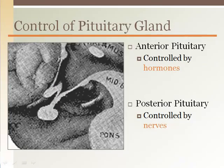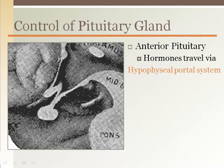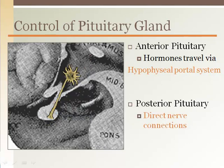The pituitary gland is divided into two parts: the anterior and the posterior. The anterior pituitary is controlled by hormones released by the hypothalamus. The posterior pituitary is controlled by nerves coming from the hypothalamus. The hormones from the hypothalamus to the anterior pituitary gland travel through a two-capillary bed network called the hypophysial portal system. The nerves that control the posterior pituitary gland have cell bodies within the hypothalamus and axon terminals in the posterior pituitary gland.